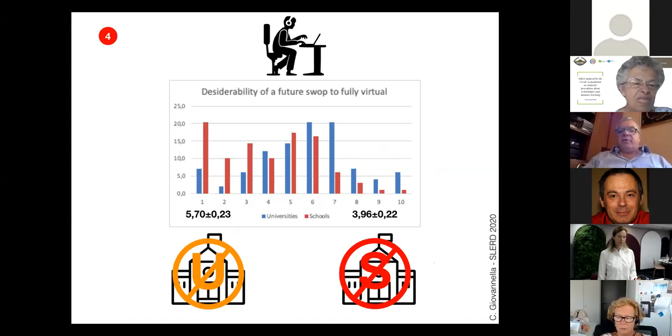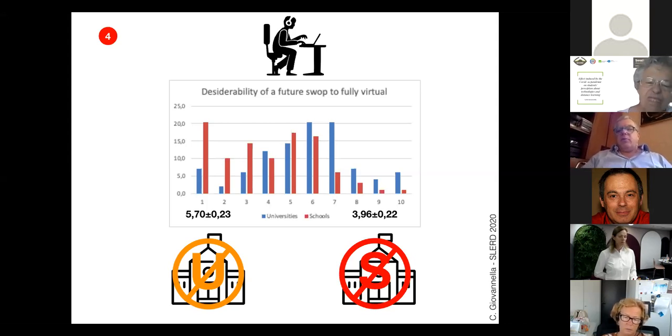This slide is very coherent to what I've shown you, because we tried to provoke them and asked if, for example, both university or school should swap fully to virtual. The answer about the universities is very coherent because the desire to swap to the virtual is around 5.7, which is coherent with the fact that they would like to continue in blended modality. While they are quite against the swapping of the school online. This is also the opinion of most of the people, at least up to the secondary school.